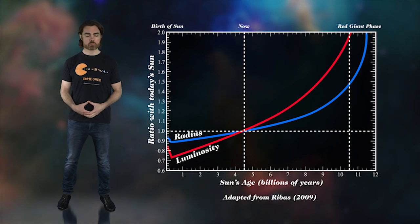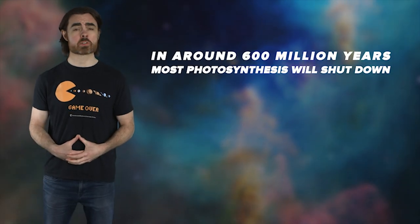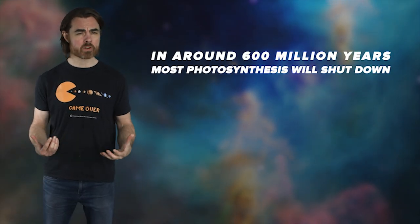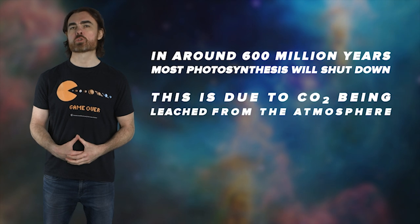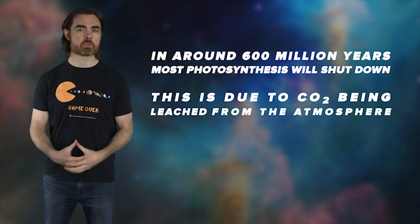But how much more energy will be too much? And what does this mean for the Earth? Well, after a brief boom in the Antarctic beachfront property market, the oceans will evaporate. But that's not the first disaster to result from the sun's brightening. In around 600 million years, most photosynthesis will shut down, killing the majority of plant life. And this is due to CO2 leaching from the atmosphere.